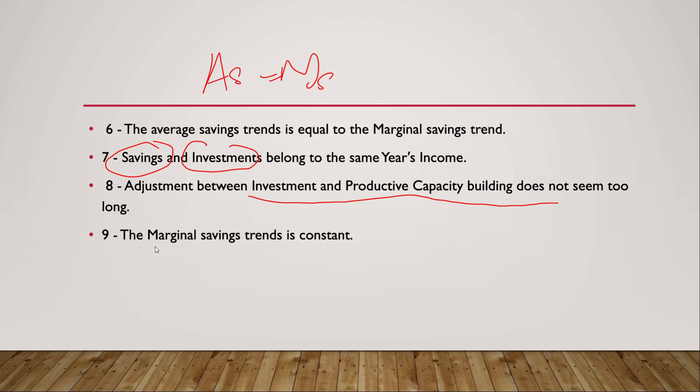The marginal savings propensity is constant, and the average savings propensity is equal to the marginal savings propensity.